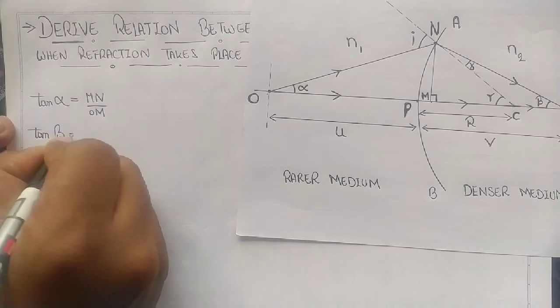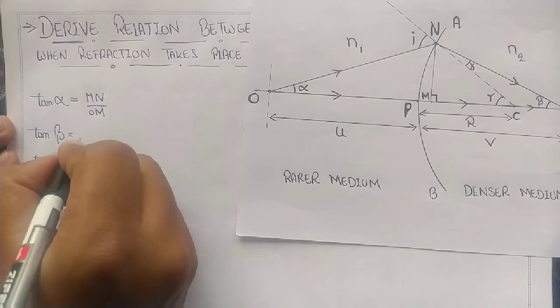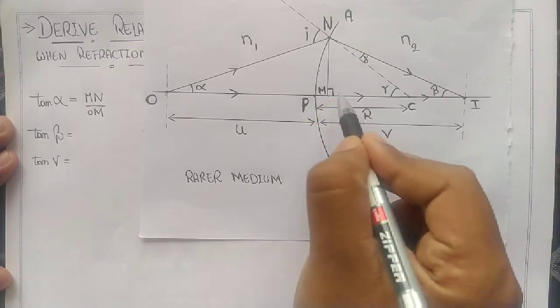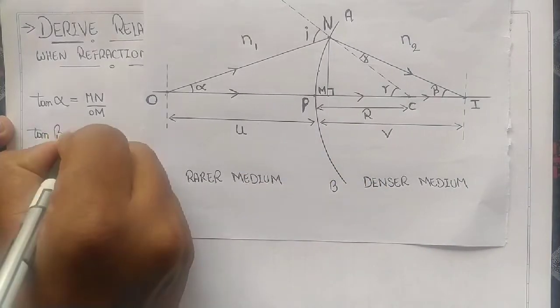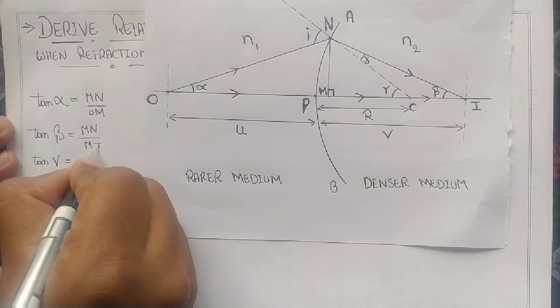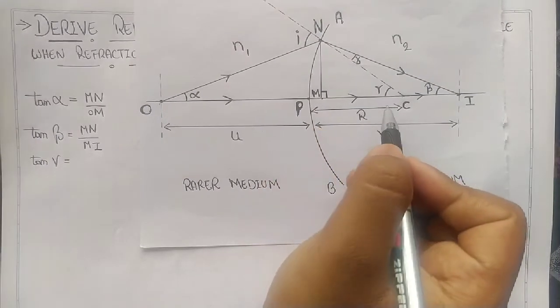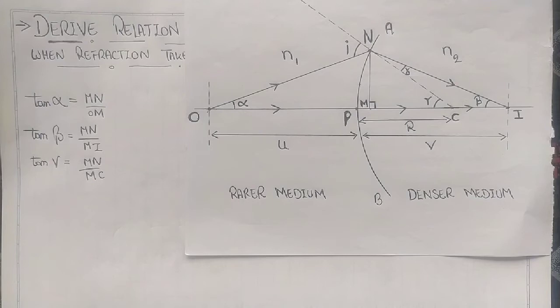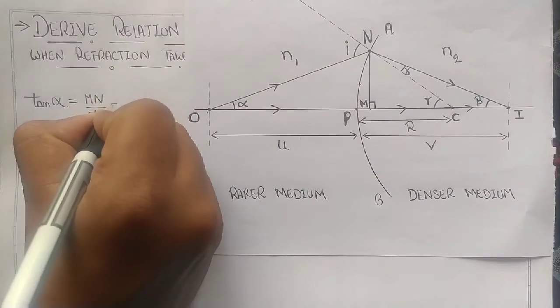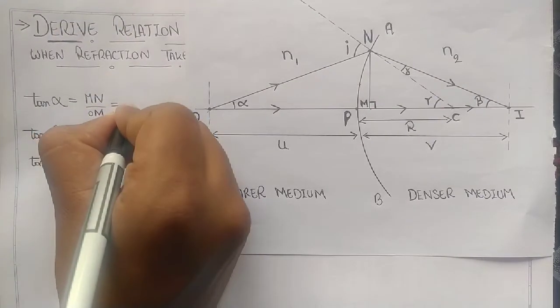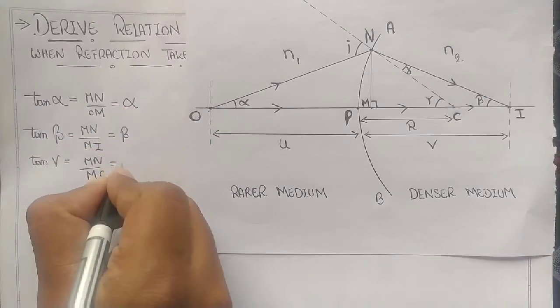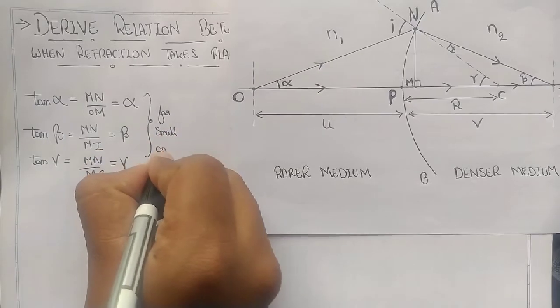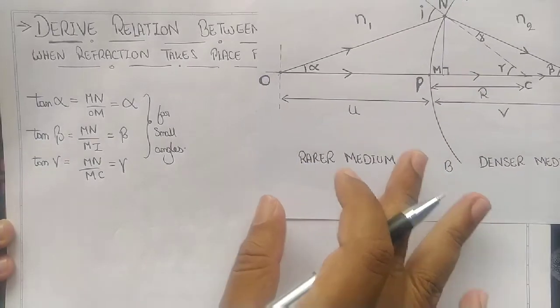Similarly, for other angles: tan beta is NM by MI, and tan gamma is NM by MC. As you know, there is one good assumption made in many physics derivations. For small angles, we take tan alpha as alpha, tan beta as beta, and tan gamma as gamma. This is the assumption we make for small angles.